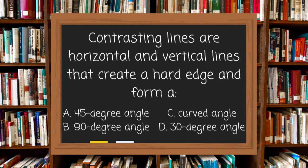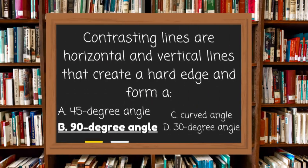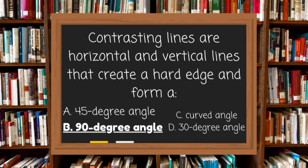Contrasting lines are horizontal lines and vertical lines that create a hard edge. They form a: A. 45-degree angle, B. 90-degree angle, C. Curved angle, or D. 30-degree angle. The answer is B, 90-degree angle.